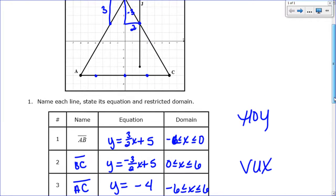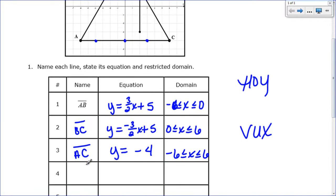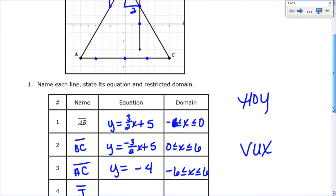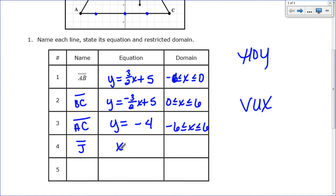And so now we have one last line and we have to do line J, which is that vertical line that's right there. And if you remember with VUX, vertical lines have undefined slope and so the equation is x equals. So if we look at our vertical line right here, it crosses the x axis where x equals 2. So the equation is just x = 2.